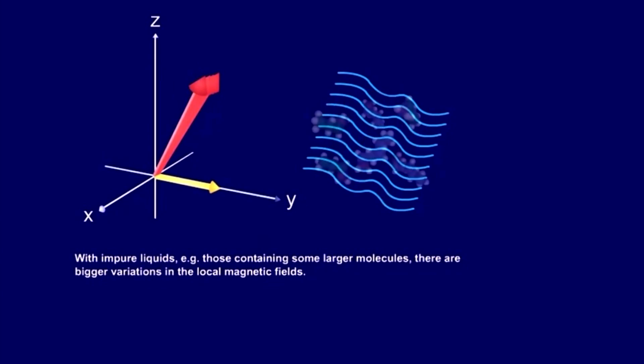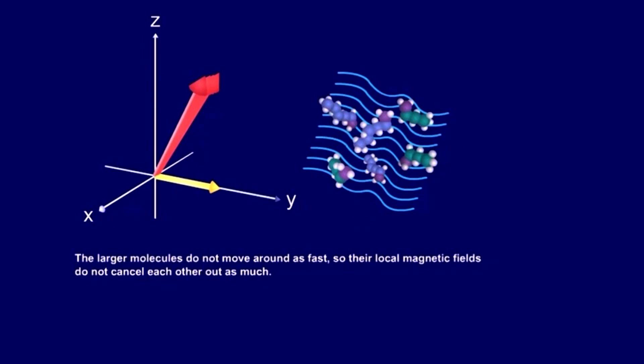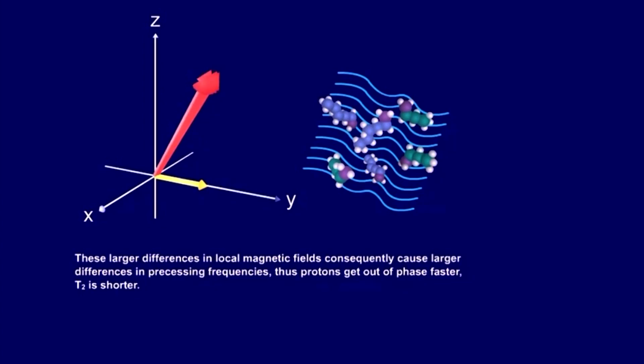With impure liquids, for example those containing some larger molecules, there are bigger variations in the local magnetic fields. The larger molecules do not move around as fast, so their local magnetic fields do not cancel each other out as much. These larger differences in local magnetic fields consequently cause larger differences in precessing frequencies. Thus, protons get out of phase faster and T2 is shorter.